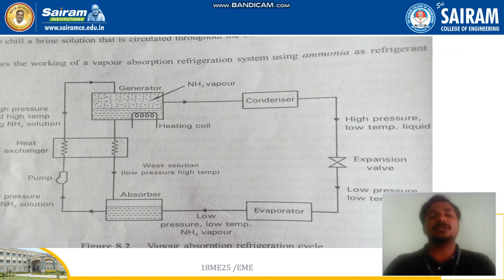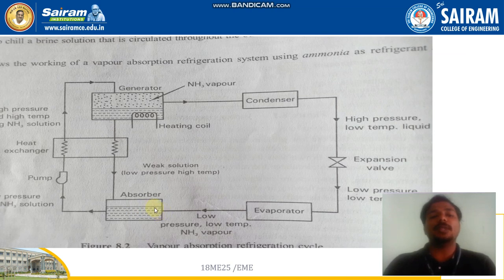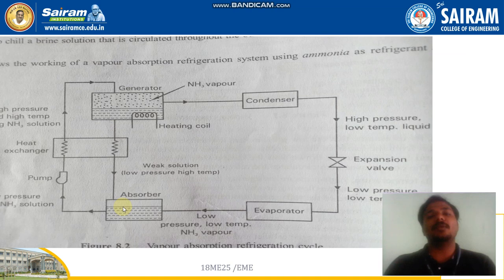When the ammonia mixes with water, the weak ammonia solution dissolves and only the strong ammonia solution remains. This strong ammonia solution is at low pressure and low temperature in liquid form. As per the second law of thermodynamics, heat cannot flow from lower to higher temperature without an external agency, so an external agency is needed.